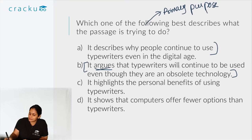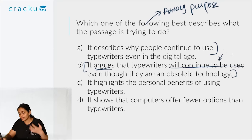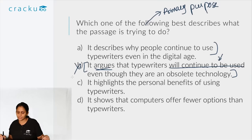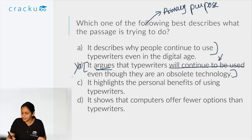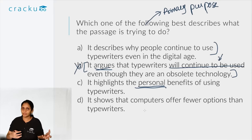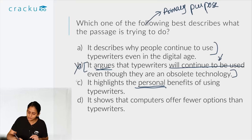Furthermore, option B introduces a distortion: the author describes what is currently happening, not what will happen in the future. That information — that typewriters will continue to be used — is not in the passage, so we eliminate option B. Option C: 'It highlights the personal benefits of using typewriters.' Though it does highlight benefits, the adjective 'personal' distorts the option. The first examples given are of typewriters in US and Russian government departments — those are professional benefits, not personal ones. So option C is a trick and can be eliminated.